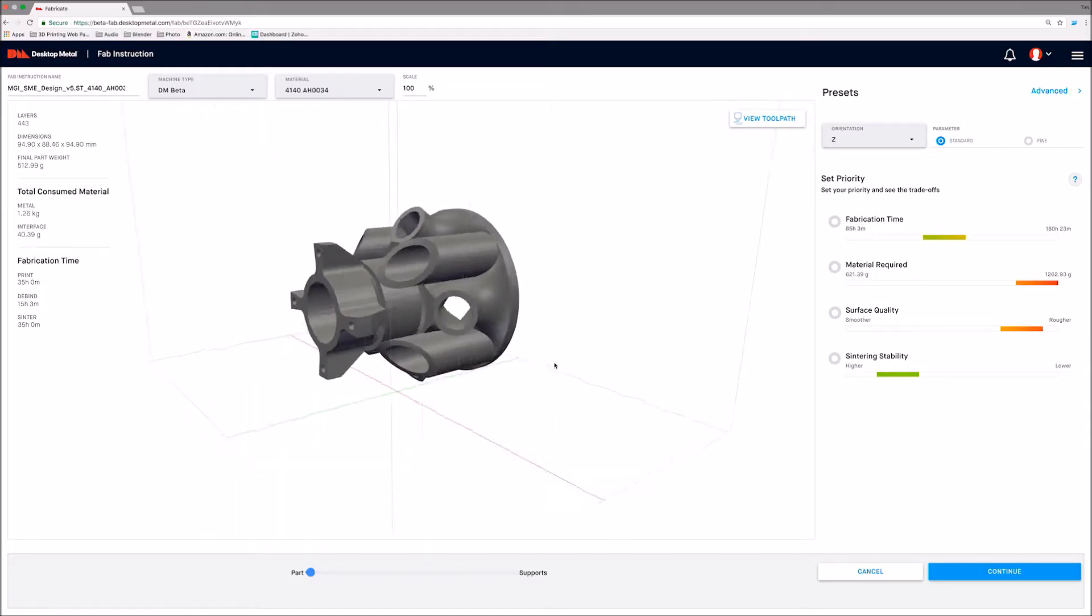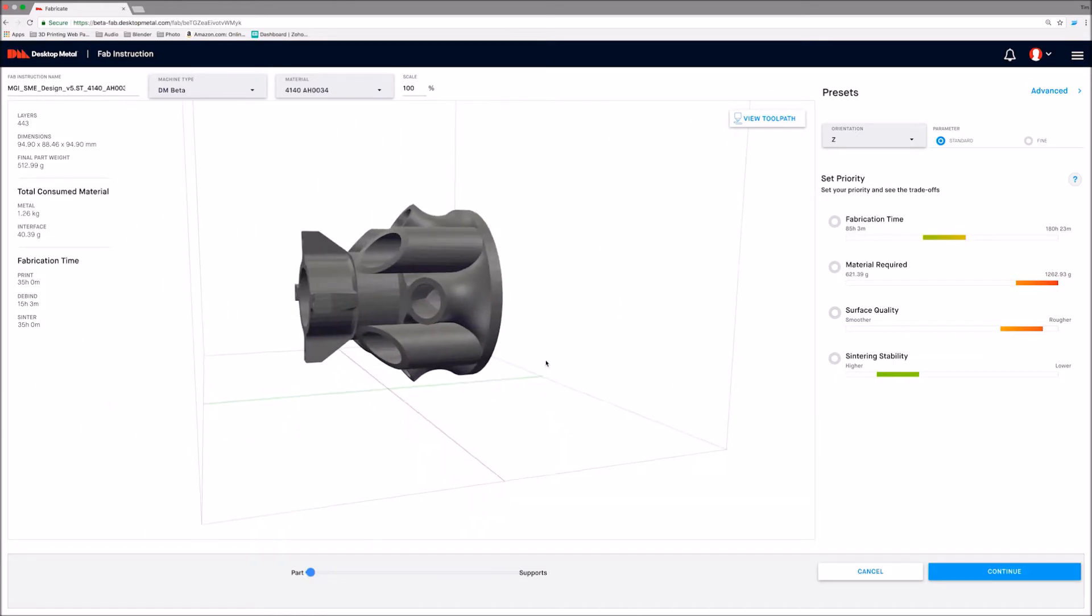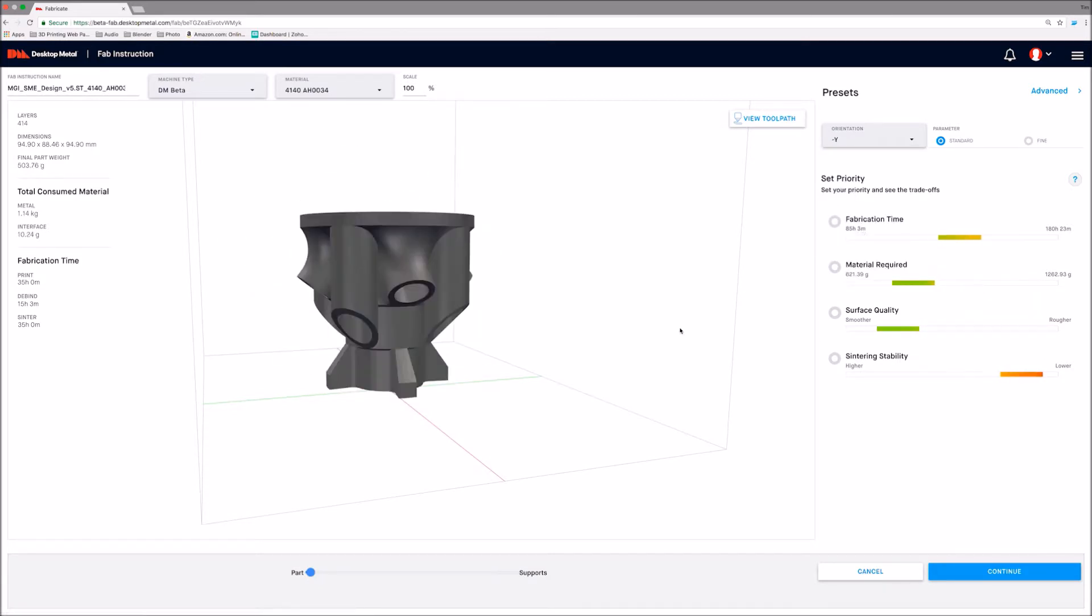Fabricate Software constructs build plans from STL or native CAD files. Based on user-defined parameters, material, and part geometry, Fabricate automatically adjusts the design for part shrinkage, constructs advanced support, and determines optimal orientation.